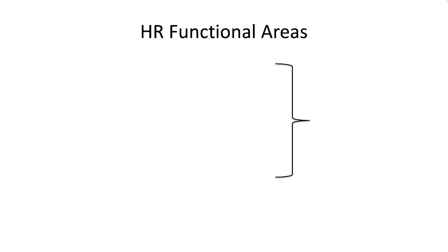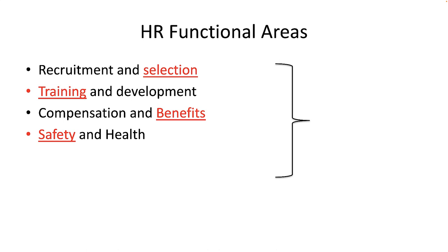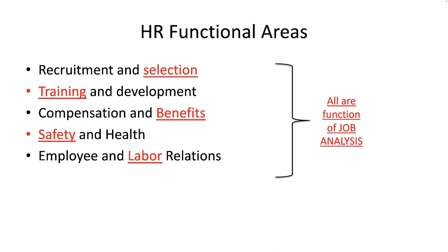Here we see the five basic human resource management functional areas. We tend to group recruitment with selection, but we think of training and development as a separate area. Compensation and benefits forms its own area. Safety and health are another. Lastly, employee and labor relations form the fifth area of HR. However, all of these areas are linked together by a common underlying HR process: job analysis.